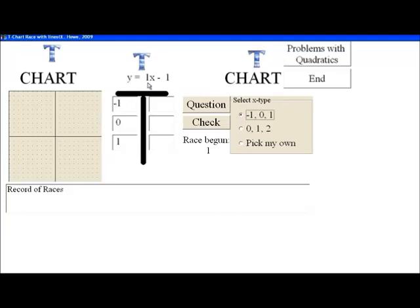If we put negative 1 in here for x, we get negative 2. Hope you see that. If you put 0 in here, that's my favorite, it's negative 1. And if I put a 1 in here, we get a 0.